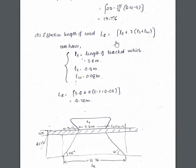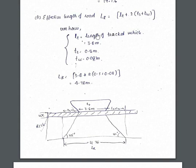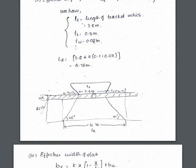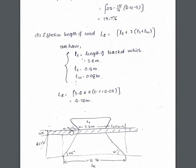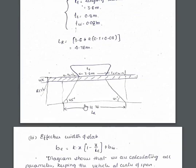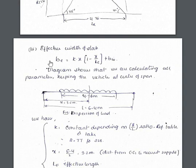Next, the effective length of the load LR = lt + 2(TS + TW). The load distributes at 45 degrees through the slab, so the horizontal spread equals the vertical thickness. Both sides contribute: LR = 3.6 + 2×(0.5 + 0.08) = 3.6 + 1.16 = 4.76 m, where 3.6 m is the track contact length, 0.5 m is slab thickness, and 0.08 m is wearing coat thickness.